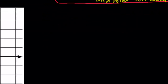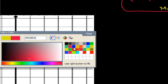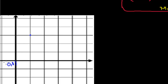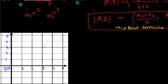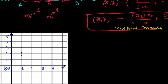Let me demonstrate this with an example on the coordinate plane. Suppose we have a point at coordinates (1, 2) and another point at coordinates (5, 4). Now I have to find exactly the middle of this line segment.